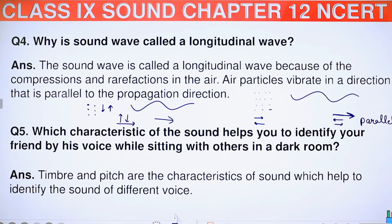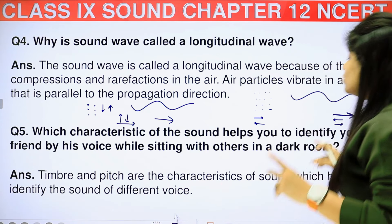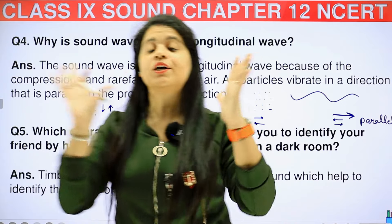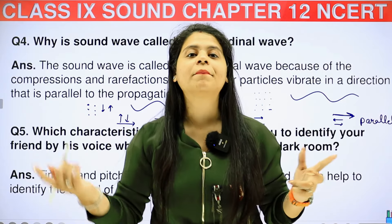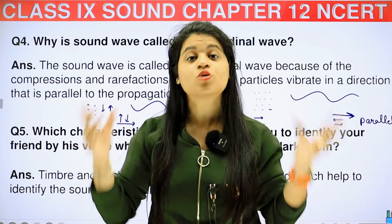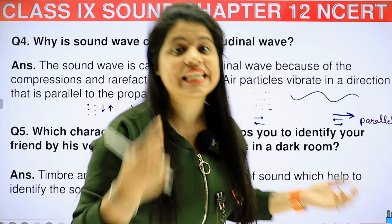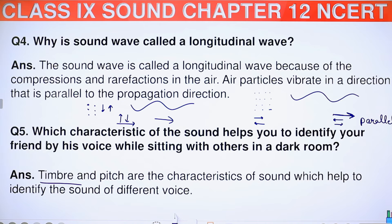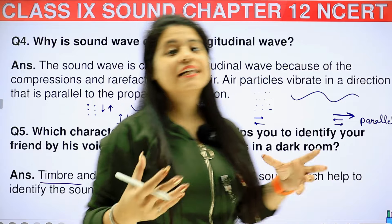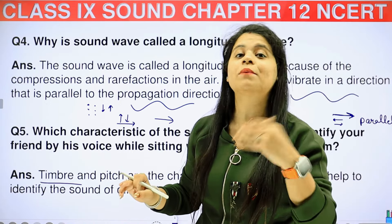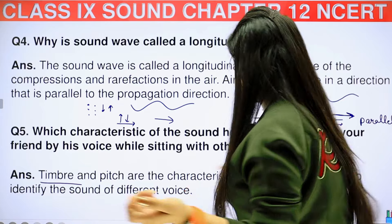Question 5: which characteristic of sound helps you to identify your friend by his voice while sitting with others in a dark room? So if you are in a dark room, you can still recognize the voices of your mother, father, brother, or friend. Timbre and pitch are the characteristics of sound which help to identify the sounds of different voices, as every person's voice differs slightly.